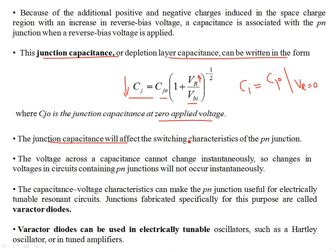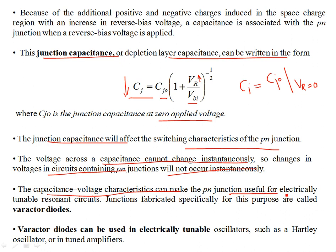The junction capacitance will affect the switching characteristics of the PN junction. The voltage across the capacitance cannot change abruptly or instantaneously — changes in voltage in circuits containing a PN junction will not occur instantaneously. That's one thing to remember for PN junction devices like diodes and transistors. The capacitance-voltage characteristics can make a PN junction useful for electrically tunable resonant circuits, and junctions fabricated specifically for this purpose are known as varactors.